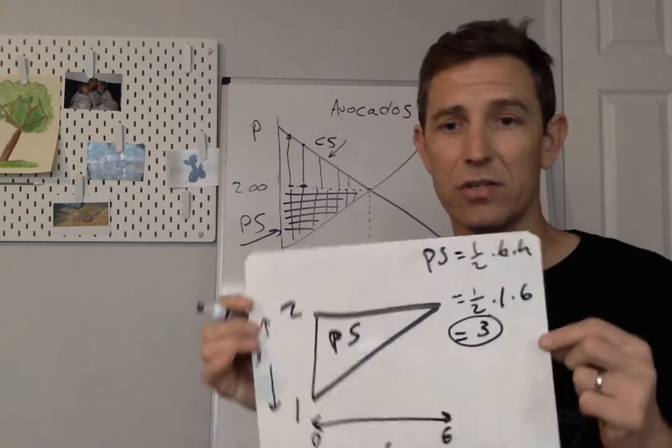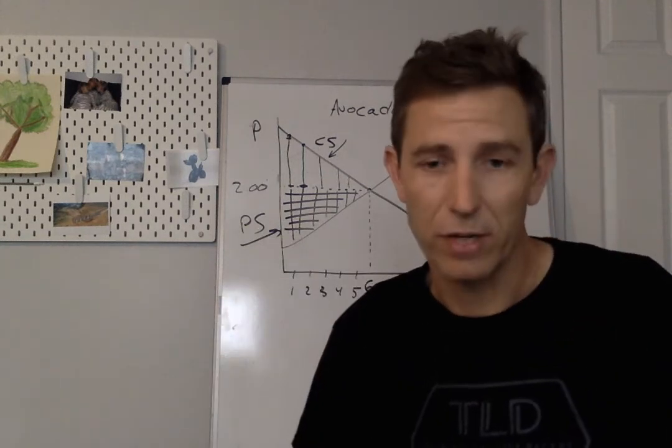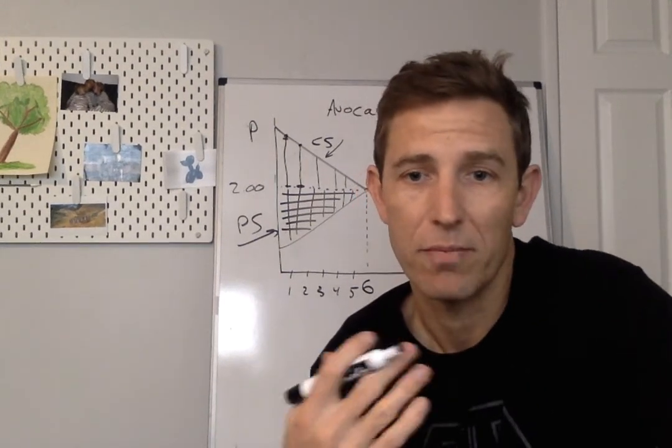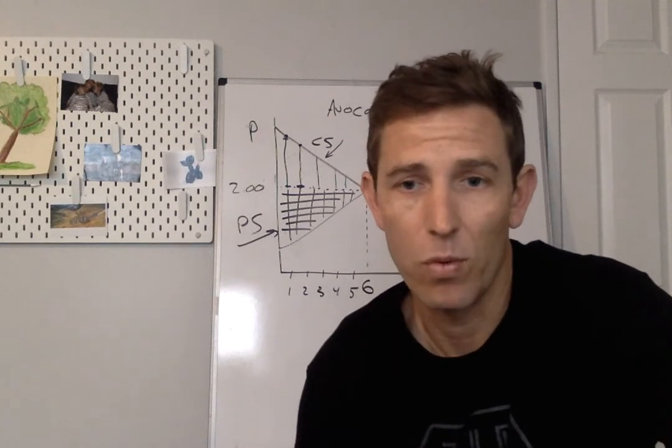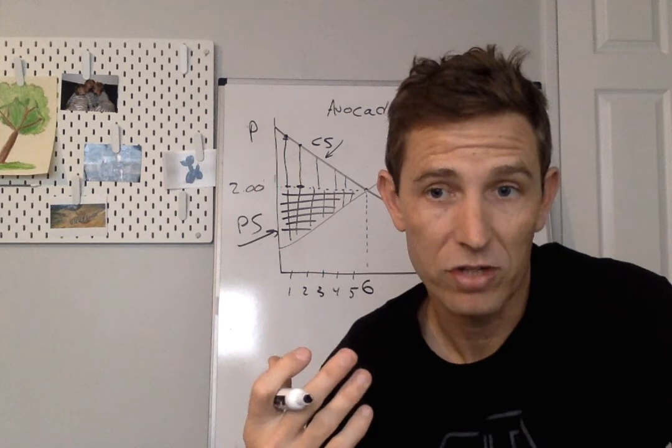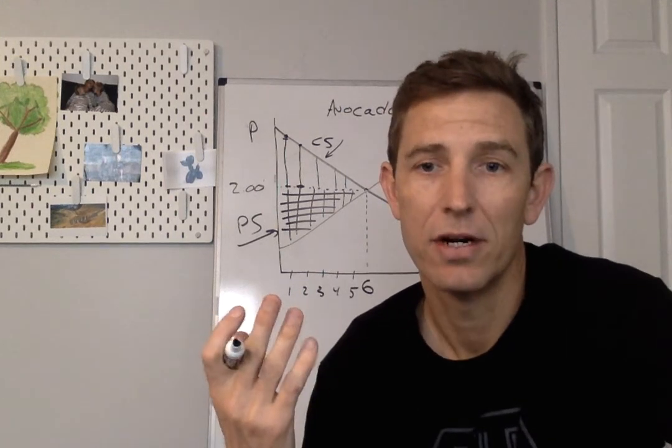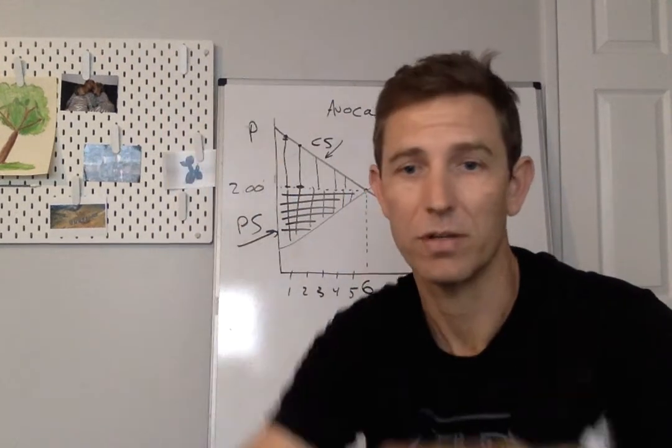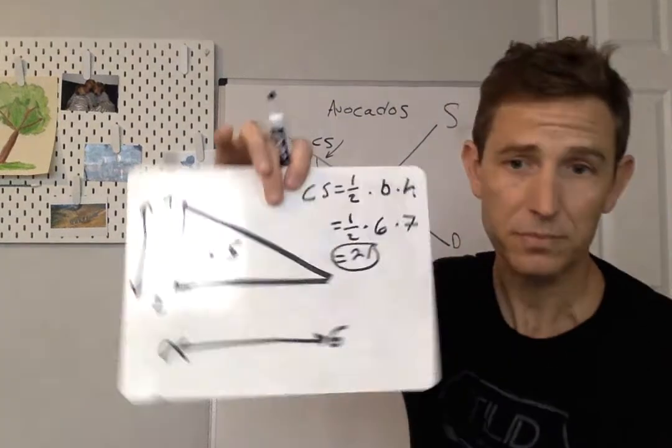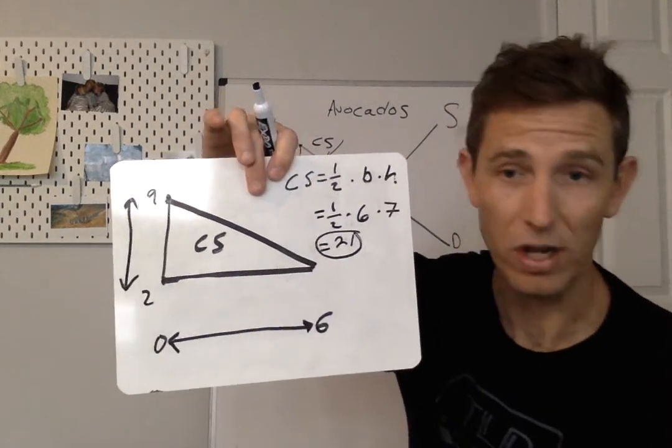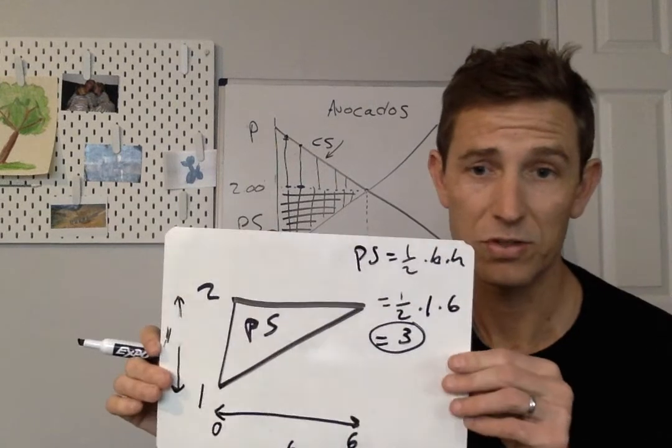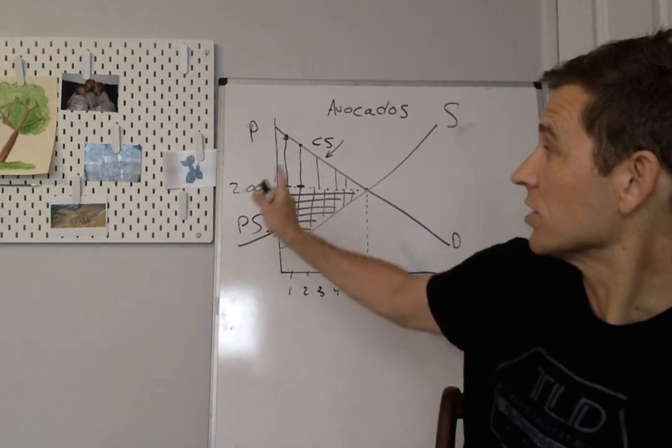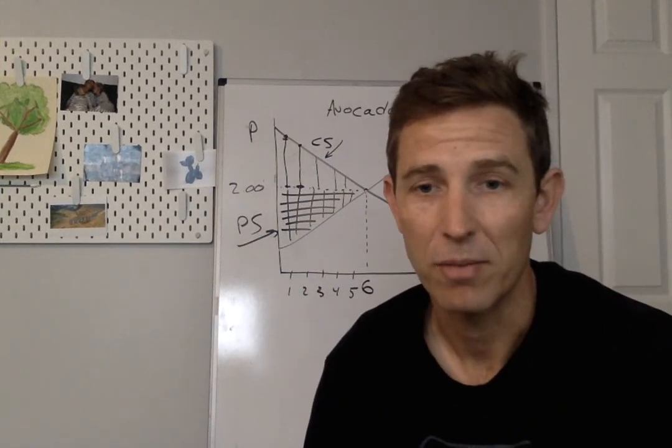Most commonly, you'll be asked to find consumer and producer surplus just like we did. One extension that you might want to be able to do as well is to find the total surplus in a market. And that's a pretty straightforward one if you've got this stuff already. To find the total surplus, you're just going to sum together the consumer and the producer surplus. Total surplus equals consumer plus producer surplus. So we found then the consumers had 21 dollars of surplus. Producer surplus was three. We add those two together. 21 plus the three would give us 24 dollars of total surplus in a problem like this.